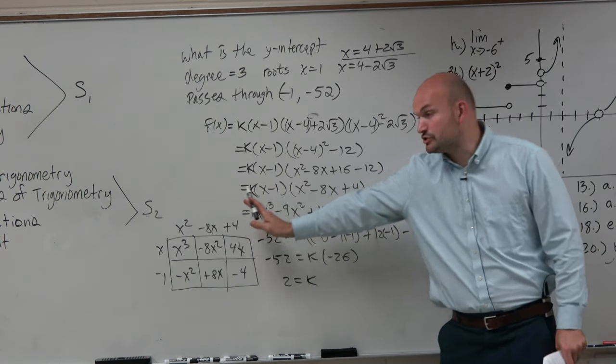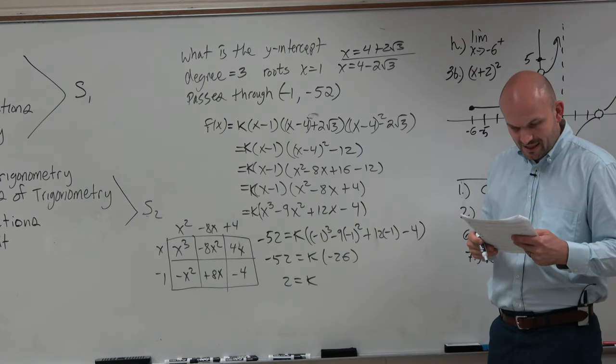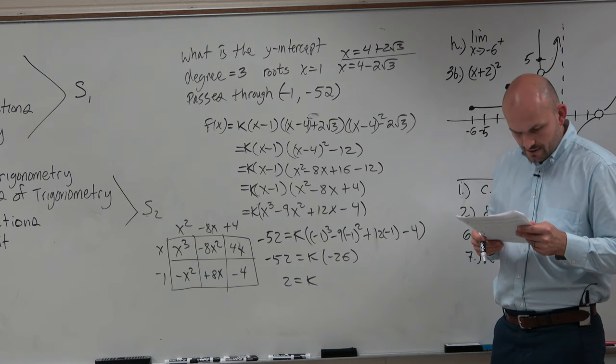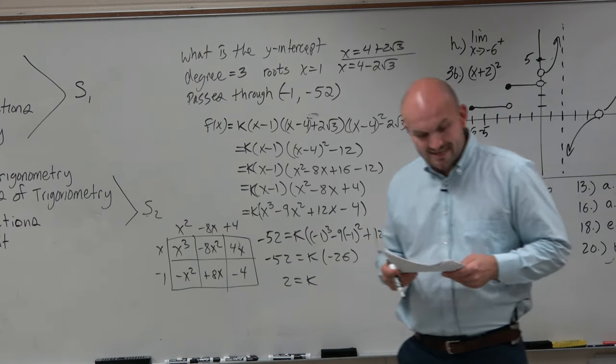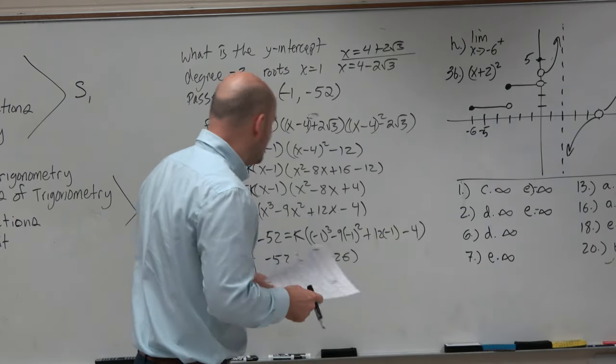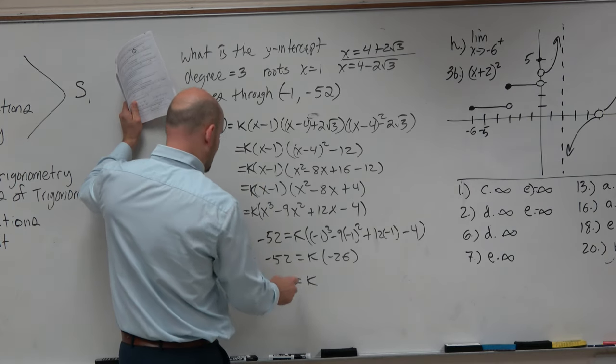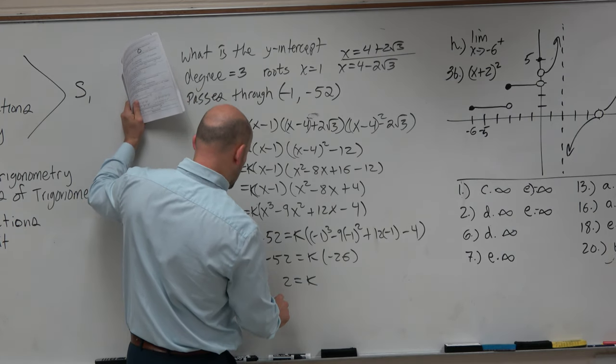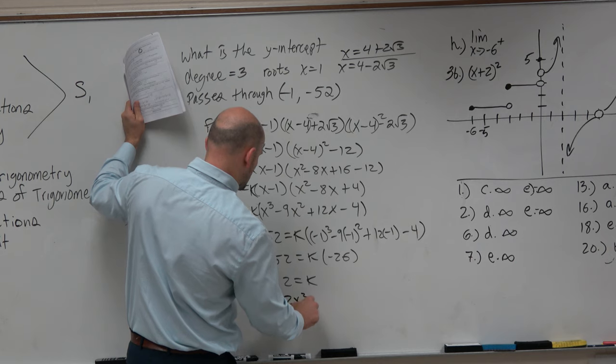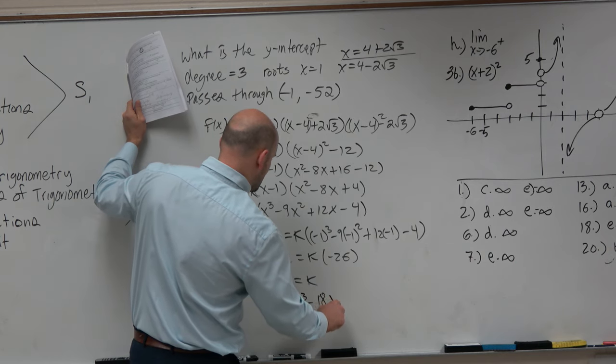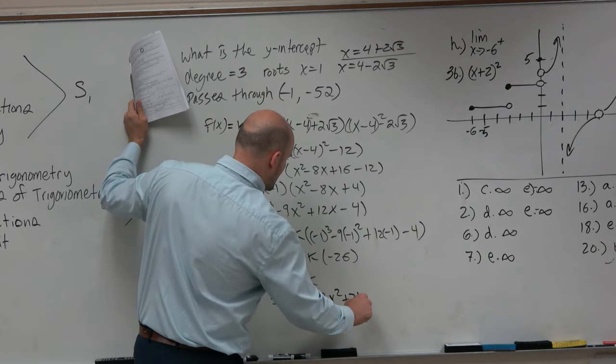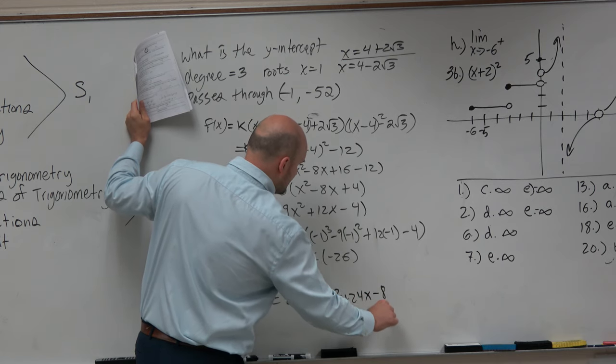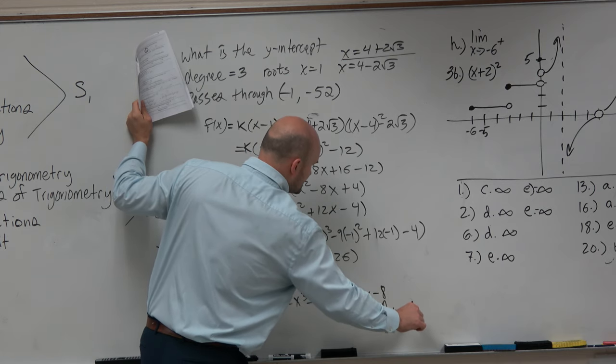So really, there's a 2 outside of there. And if you were to distribute that 2, then you'd be left with a negative 8. And is that an answer choice? Yes. So now our polynomial with k equal to 2, we really have 2x cubed minus 18x squared plus 24x minus 8. And that is your y-intercept.